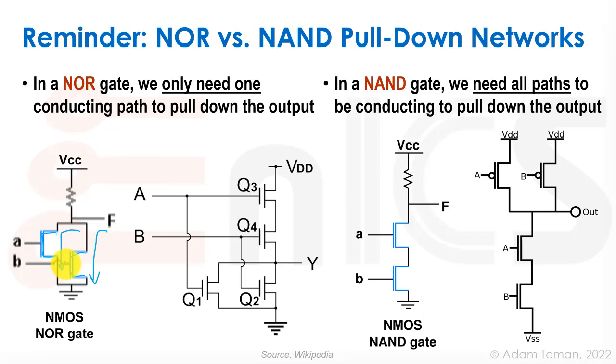In a NAND gate, on the other hand, we had serial connection. So we need all paths to be conducting. In this case, A and B both need to be conducting to pull down our output. It was similar to a CMOS NAND. The problem with that is that the more transistors that we have in series will increase our resistance and make our performance worse.